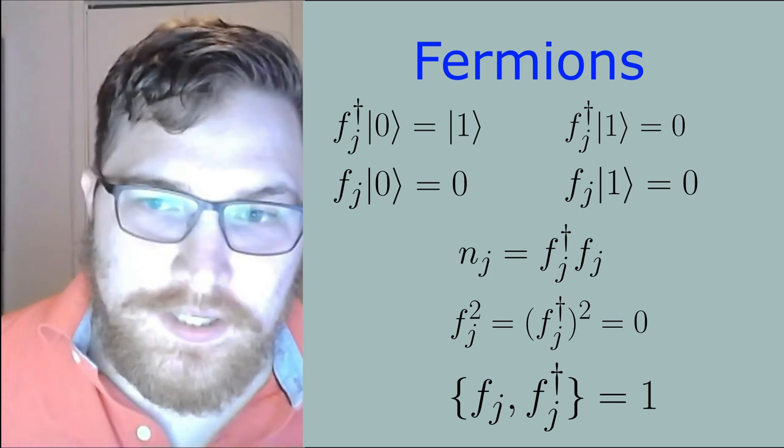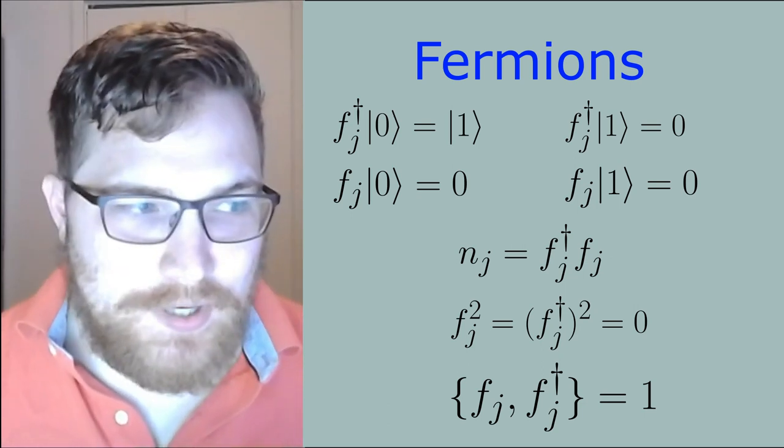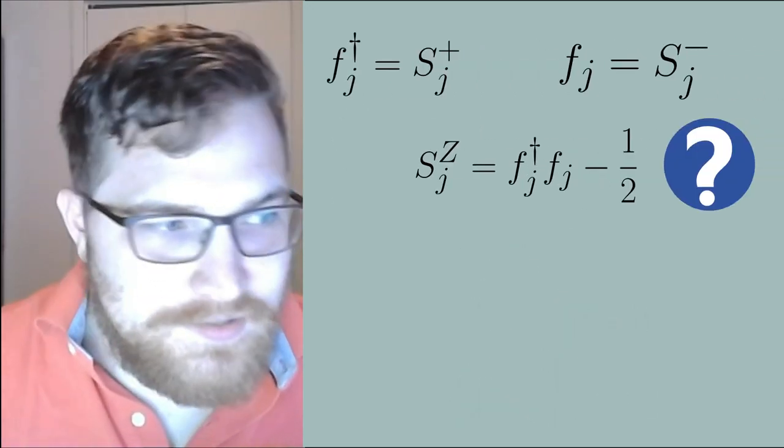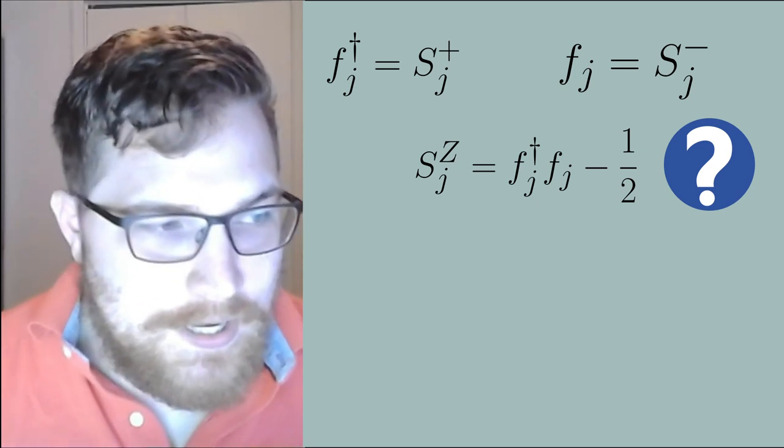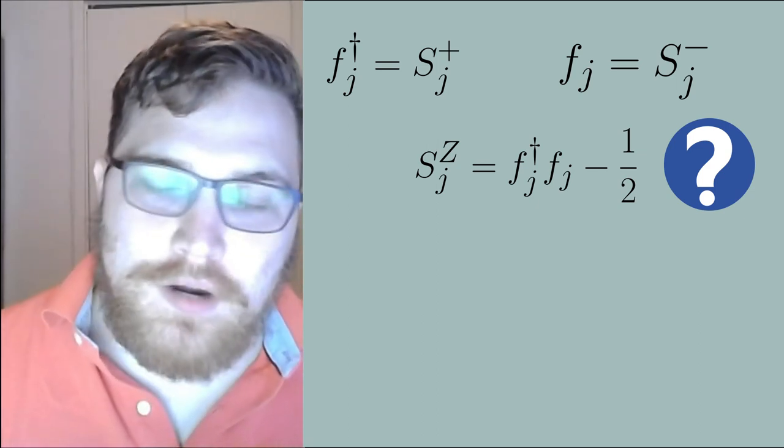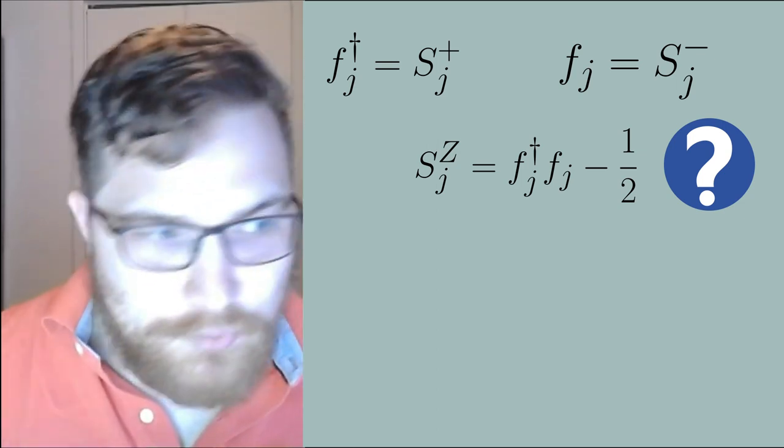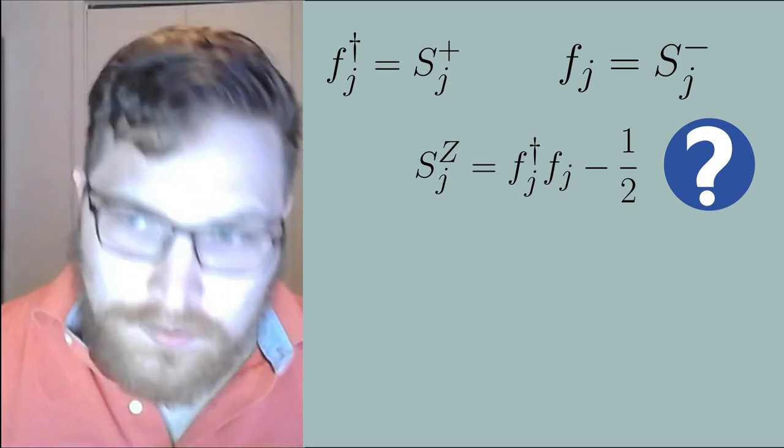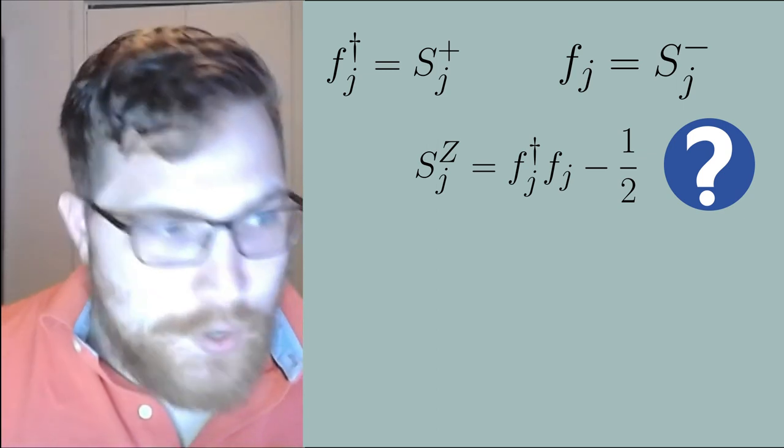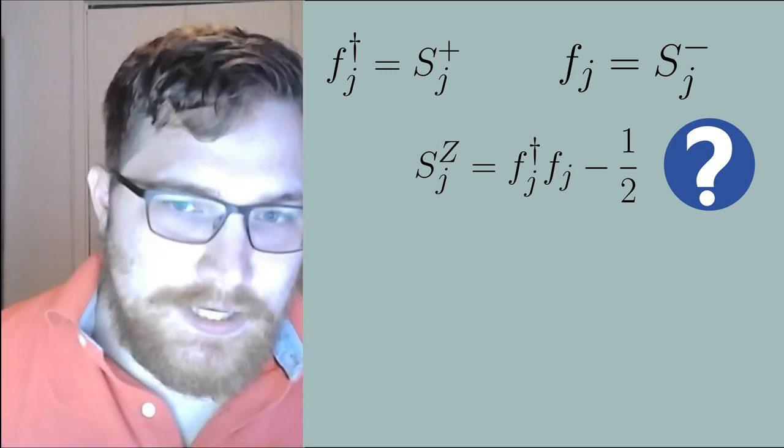So at this point in the discussion it might be tempting to try and write down the following relations that is that the creation operator is the same as the raising operator, the annihilation operator is identical to the lowering operator, and the spin z operator is related to the number operator subtracting off one half here where the one half really means one half times the identity operator.